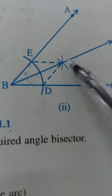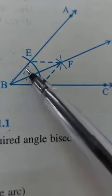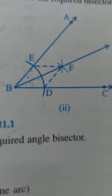Therefore, triangles BEF and BDF are congruent, and hence these angles are equal. Therefore, BF is the bisector of angle ABC.